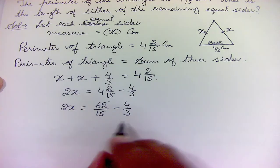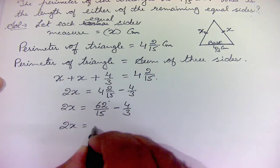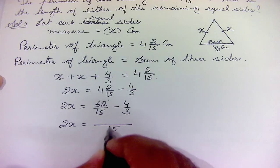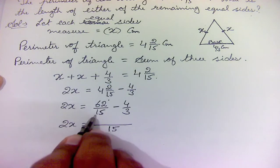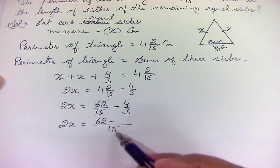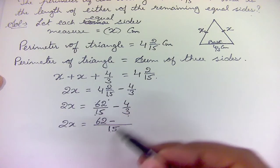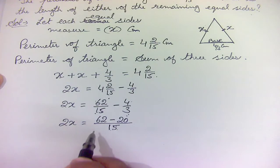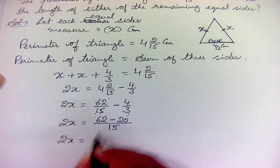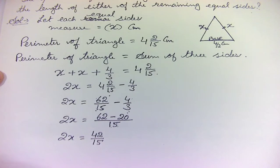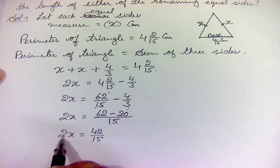To subtract the fractions, take LCM of 15 and 3, which is 15. So: (62/15) − (4/3) = (62 − 20)/15 = 42/15. Therefore 2x = 42/15.